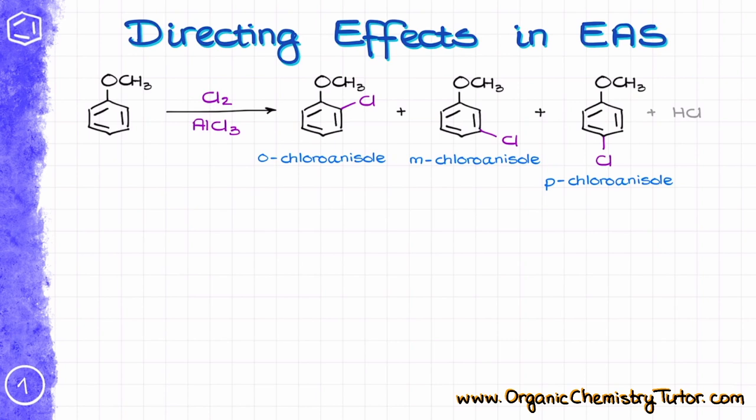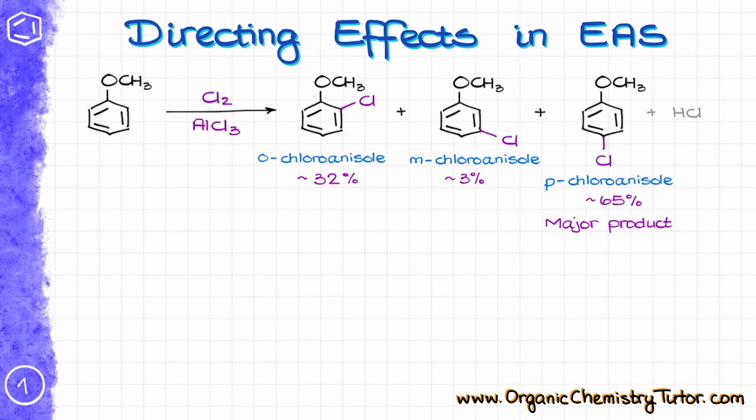If we ignore any electronic effects, we would expect roughly equal quantities of those products in the resulting mixture. However, the reality is always a little bit more interesting than our expectation. In reality, we have a clear major product, a minor one, and only trace amounts of the last one. What is even more interesting is that the major product is the one we would probably not consider the major one from a purely statistical perspective. So what's going on here? How can we explain this observation?